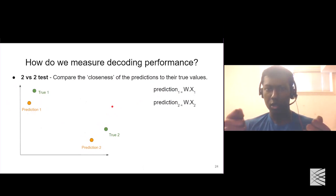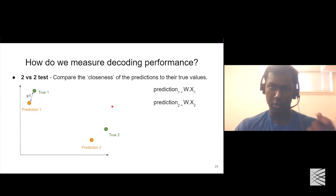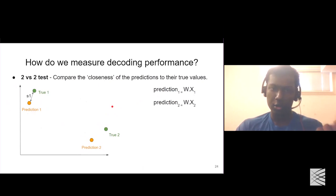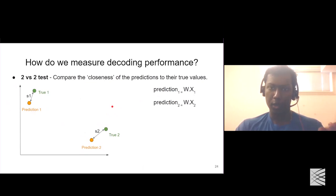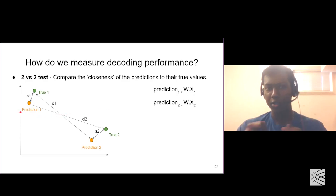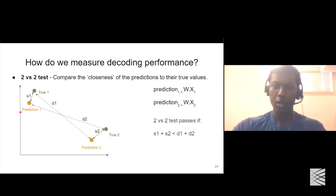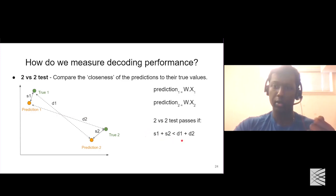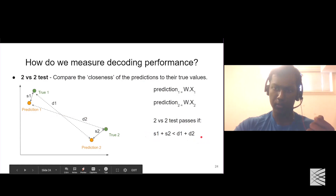The two-versus-two test works as follows. First, we calculate the similarity between true-one and prediction-one, and also between true-two and prediction-two. We also calculate the similarity between the opposite pairs: true-one and prediction-two, and true-two and prediction-one. The two-versus-two test passes if the summation of similarities between correctly matched pairs is greater than the summation of similarities between the incorrectly matched pairs.